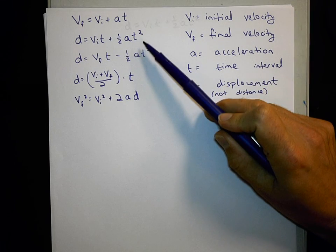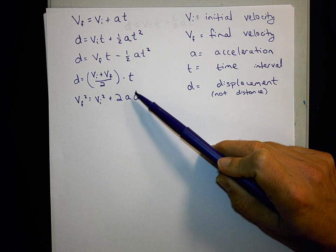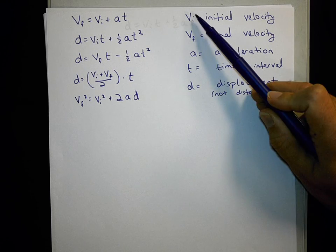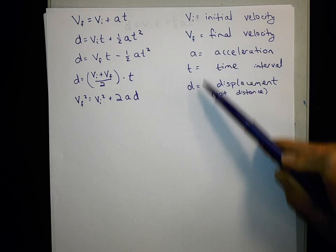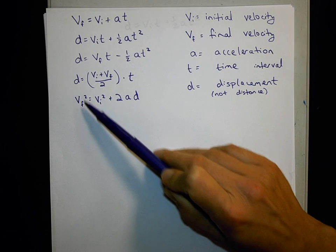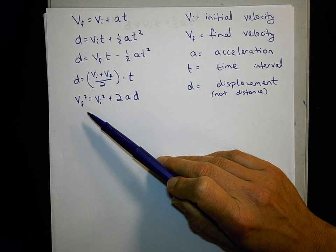Here are five equations that describe the motion of an object when it's constantly accelerating, and five givens that might be in the equation. Typically if you know three of these givens, there'll be an equation you can choose from that will help you solve for one of the missing values.